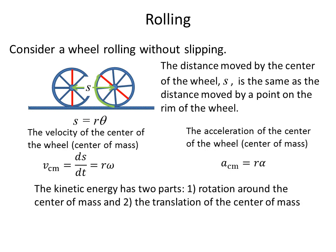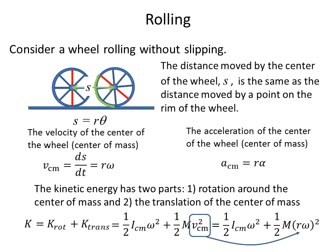The kinetic energy has two parts. One is the rotation around the center of mass and the second is the translation of the center of mass. So we write K equals the rotational part plus the translational part. The rotational part is one half I_cm, the moment of inertia around the center of mass, times omega squared, plus the translational part which is one half times the mass of the wheel times the velocity of the center of mass squared. We can replace the velocity of the center of mass squared with r times omega, so we have a function of just omega for the total kinetic energy in the case of rolling.